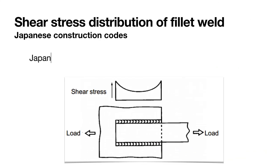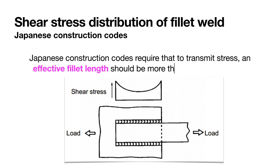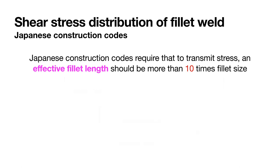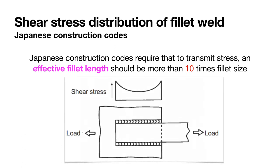The Japanese construction code requires that to transmit stress, the effective fillet length must be more than 10 times the fillet size, where fillet size refers to the leg of the fillet. We will now move to the calculations for determining the strength of fillet welds.